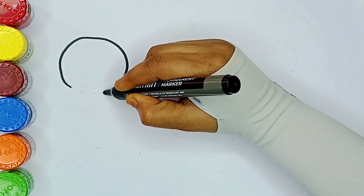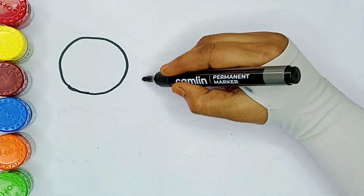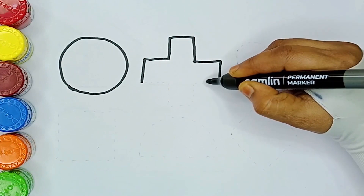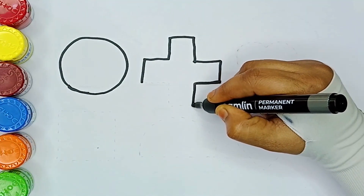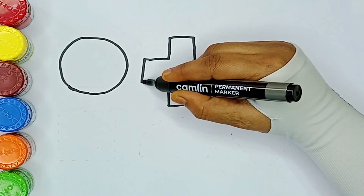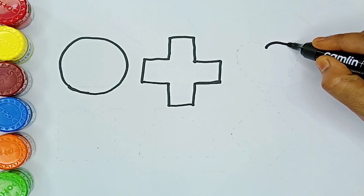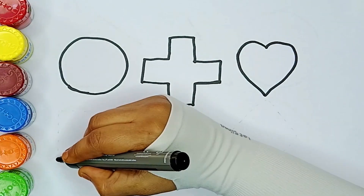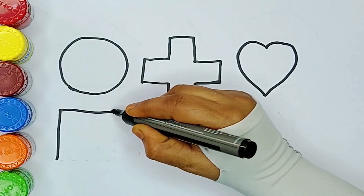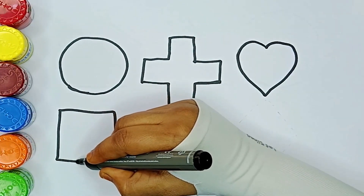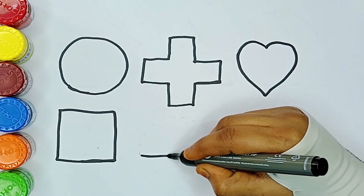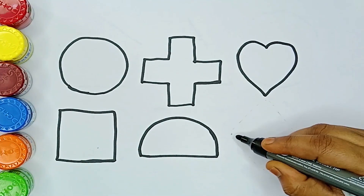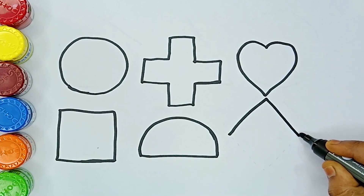Circle. Cross. Heart. Square. Semicircle. Rhombus.